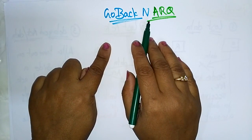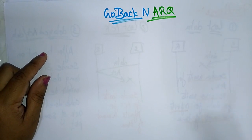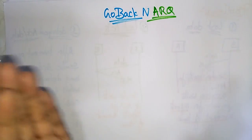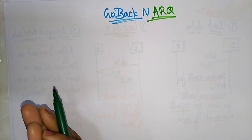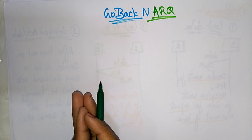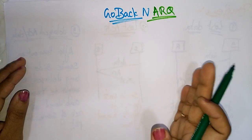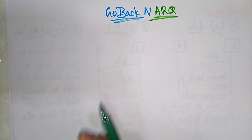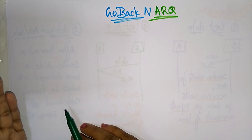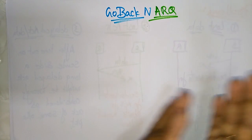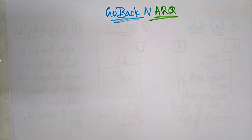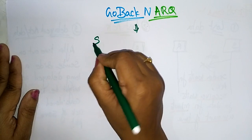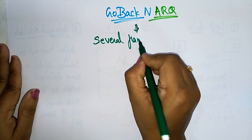In Go-Back-N, the N indicates the number of frames that you are going to send. Suppose seven frames — the sender can send seven frames at a time. The main difference between Stop-and-Wait and sliding window protocol is: Stop-and-Wait can send only one frame at a time, but in the sliding window protocol, several frames can be sent before receiving the acknowledgement.